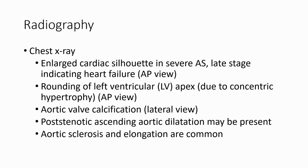In chest X-ray findings of aortic stenosis: we may see pulmonary vascular congestion in severe aortic stenosis indicating failure; rounding of the ventricular apex due to concentric hypertrophy; aortic valve calcification in the lateral view; post-stenotic ascending aortic dilatation may be present; and aortic sclerosis and elongation are common.